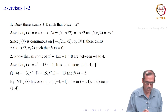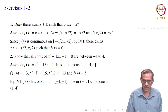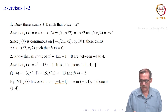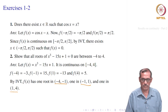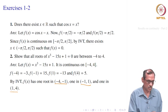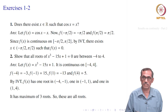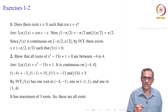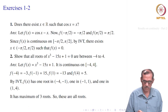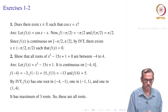We have found 3 roots between −4 and 4: one in (−4, −1), another in (−1, 1), and another in (1, 4). But this is a cubic equation, so it has at most 3 roots — from the Fundamental Theorem of Algebra, which we assume here. Therefore, all roots of the equation lie in the interval [−4, 4].